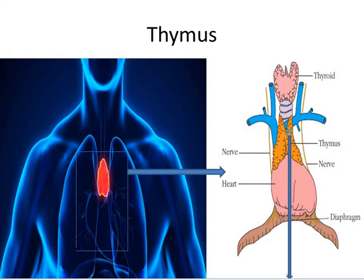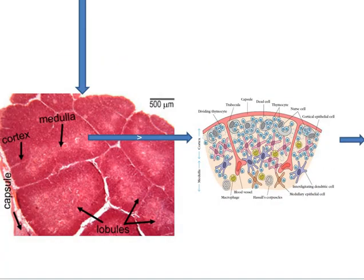The thymus is a flat, bilobed organ situated above the heart. Each lobe is surrounded by a capsule and is divided into lobules separated by strands of connective tissue. The outer region, called the cortex, is densely packed with immature T-cells called thymocytes, whereas the inner compartments, called the medullae, are sparsely populated with thymocytes. The sequence of T-cell maturation within the thymus is not completely understood.